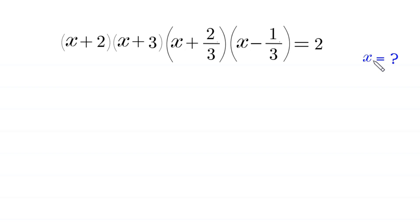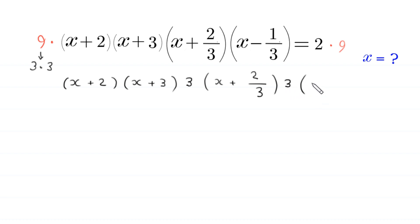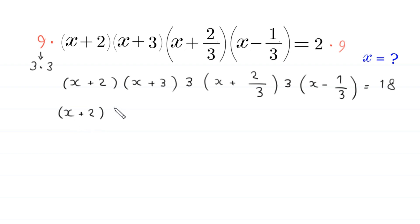Let's start by multiplying both sides of this equation by 9. On the left hand side we multiply by 9, which is the same as 3 times 3. So we can rewrite this expression as (x plus 2)(x plus 3) times 3 times (x plus 2/3) times 3 times (x minus 1/3), and on the right side 2 times 9 will become 18.